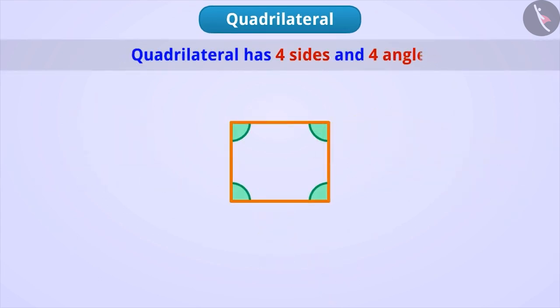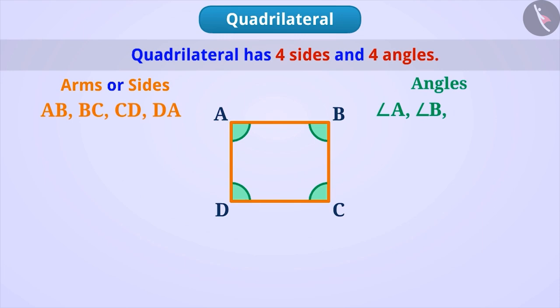A quadrilateral has four sides and four angles. Like here, the quadrilateral has four sides AB, BC, CD, DA and four angles: angle A, angle B, angle C and angle D.